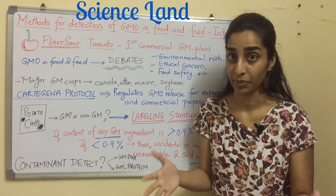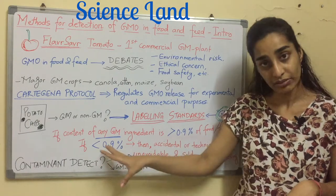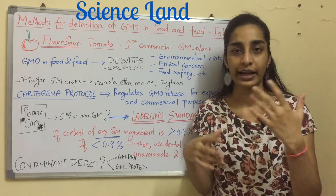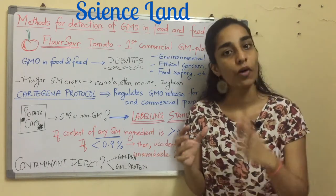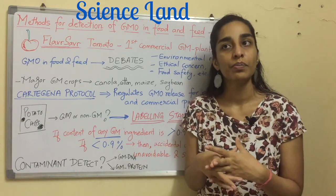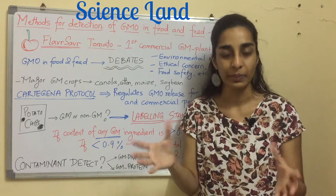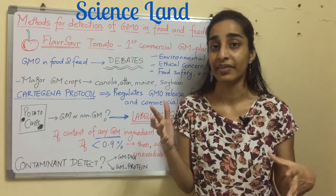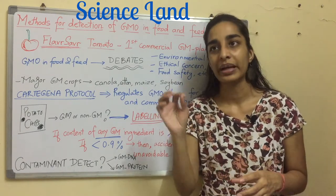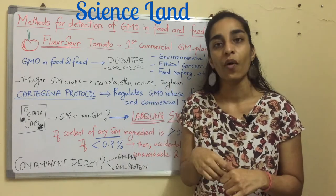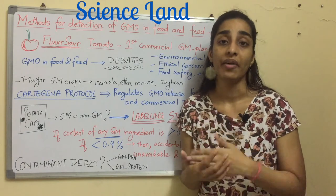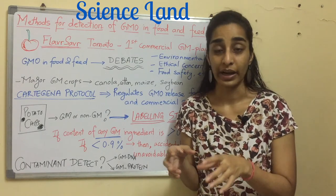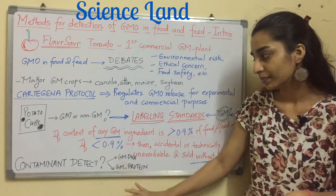If the GM content is less than 0.9%, it is considered to be an accidental or technically unavoidable situation, and the GM label is not given to that product. This 0.9% value is very important. Since a genetically modified ingredient is actually a contaminant — a foreign substance — how do you detect it? When people eat a GMO like the Flavr Savr tomato, they may experience side effects such as rashes, blisters, or itching.